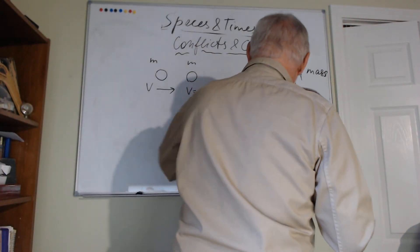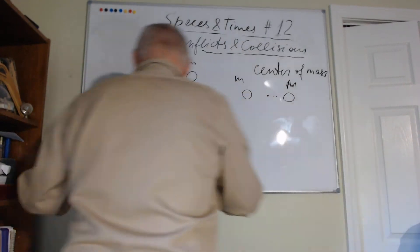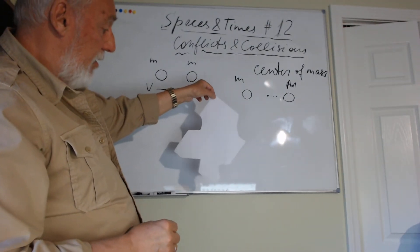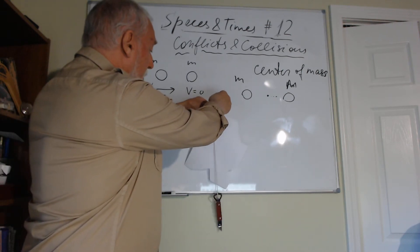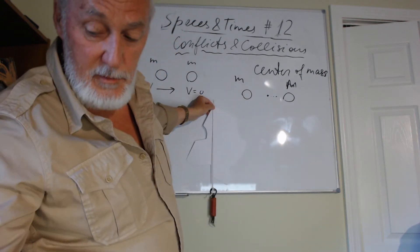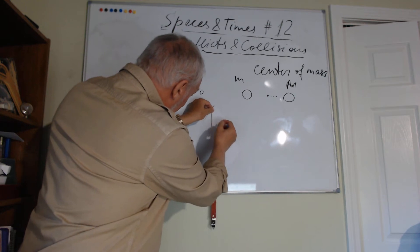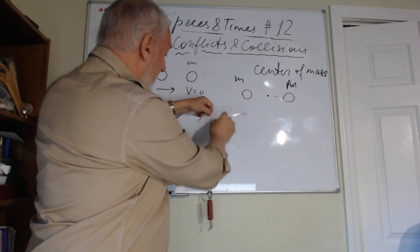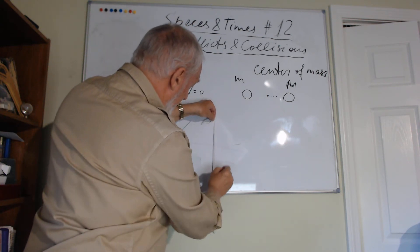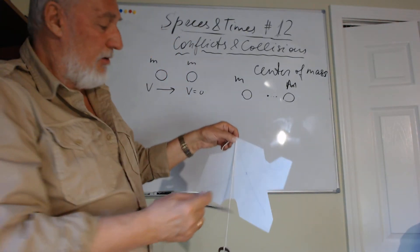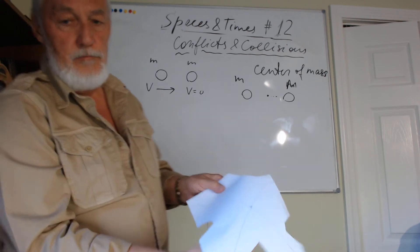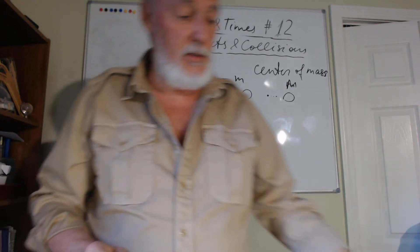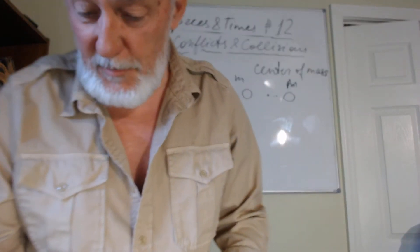There's an easy way to see the center of mass physically. Take a shape, put a thread on it going straight down, draw that line. Take another point and do the same. Where these lines intersect is the center of mass. This works for any shape. One homework task will be to make complex shapes and find their centers of mass.